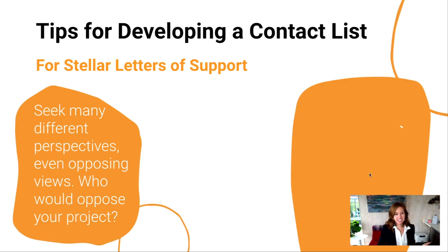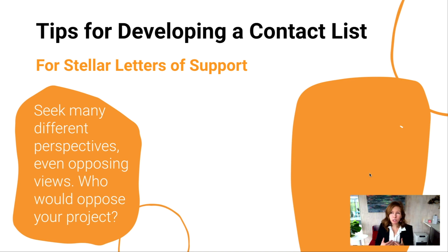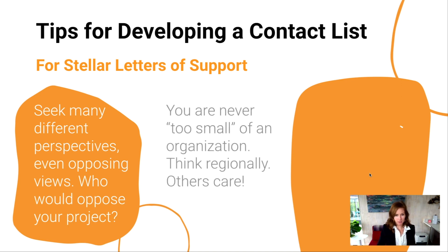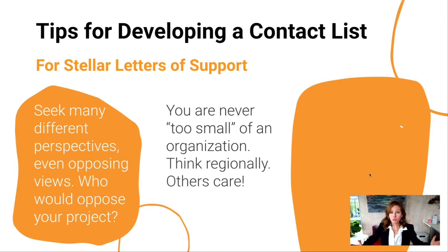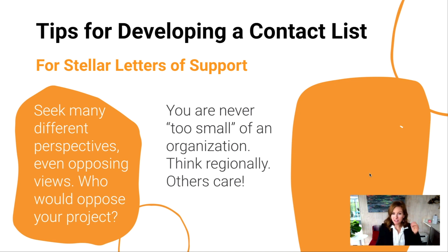Seek as many different perspectives as you possibly can, including potentially some opposing views — think about who would not support your project and how you can bring them into the planning process. If you're a really tiny organization, you might wonder who to get letters of support from. Think regionally — even if you're very rural and remote, there are organizations at the regional, statewide, or provincial level that would want to see you succeed and want to see this project happen. Don't be limited to just asking people in your tiny community.